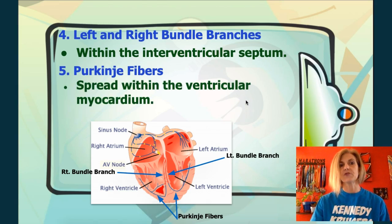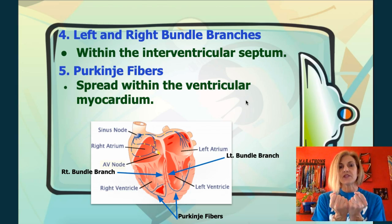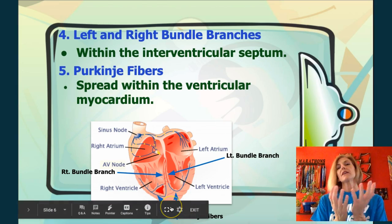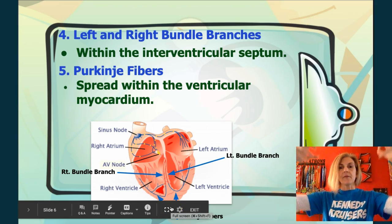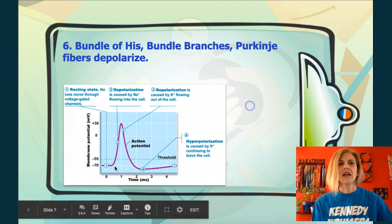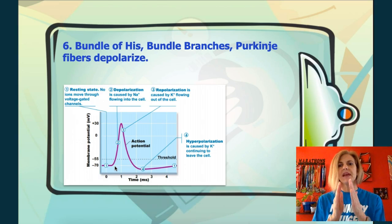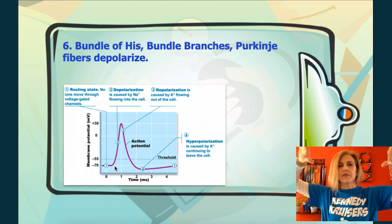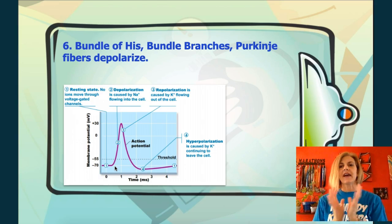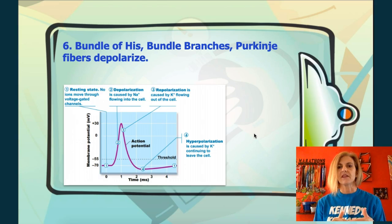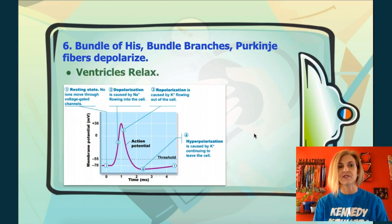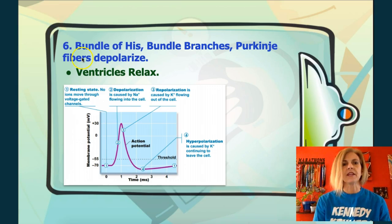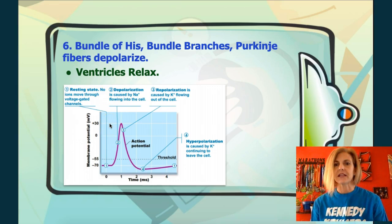The Purkinje fibers are the last in this sequence. The impulse travels to the Purkinje fibers, causing a contraction of the ventricles. It starts at the apex — the point at the bottom — and moves up through the ventricles. After the bundle of His passes the impulse to the bundle branches and the bundle branches pass their impulse through the Purkinje fibers, that causes the whole ventricular contraction, and then the ventricle goes through a relaxation phase.